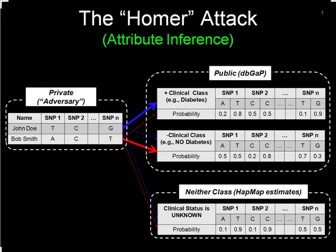If you can't rule out that the person is in the dataset, you move to the next step: comparing each record against the summary probabilities in each class. For instance, John might relate to the positive class — diabetes — with much greater certainty than the negative class, while Bob relates to the negative class at a much greater rate. This is what I call attribute disclosure: the attacker already knows the individual's identity and went through the trouble of sequencing their data, now finding out an additional piece of clinical information.